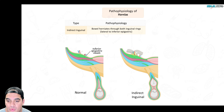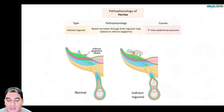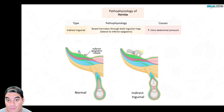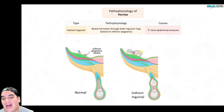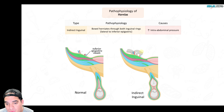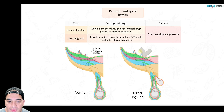It herniates through both of the inguinal rings, lateral to the inferior epigastric artery. This happens when someone has a very high amount of intra-abdominal pressure — maybe from heavy lifting or moving boxes — which creates the opportunity for the bowel to herniate through the inguinal ring.